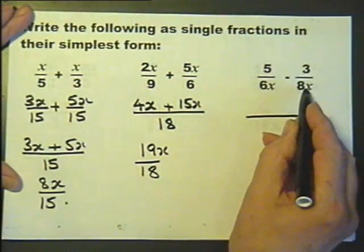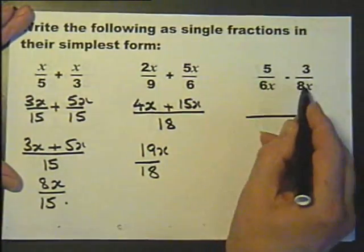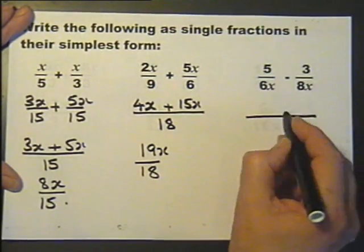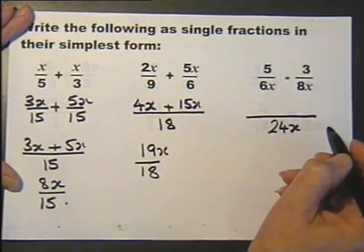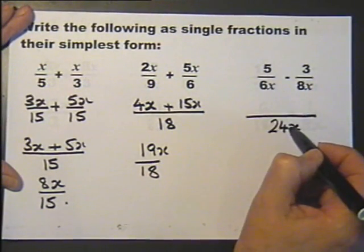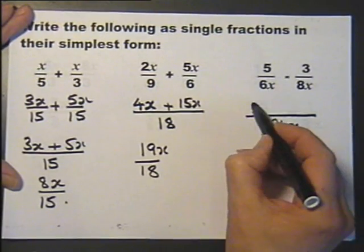Now we've got to consider both the number and the algebra. So, 6x, 8x, 24x is a common denominator. 6x into that, so that's been multiplied by 4. 4 times 5 is 20.